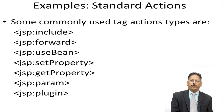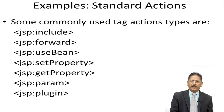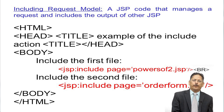This is one more example using the include directive. Here, include page equals to 'powerof2.jsp'. The difference between JSP colon include and JSP colon forward: in forward we forward the request to another page, but in include, we include that particular file in the current page. The current page is index.jsp, and inside it we are including powerof2.jsp and orderform.jsp.